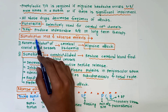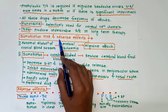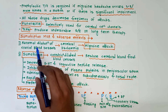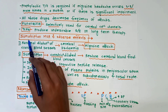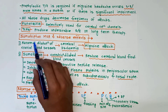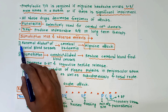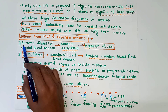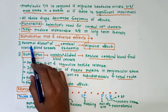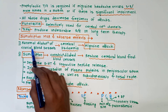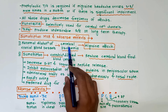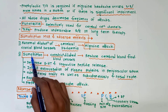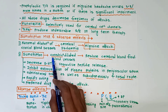You may be asked about sumatriptan's mechanism of action and adverse effects. Sumatriptan is a 5-HT agonist used to treat acute attacks of migraine. To understand how it works, first consider how migraine attacks occur: abnormal dilatation of cranial blood vessels causes cerebral ischemia, which leads to the migraine attack.